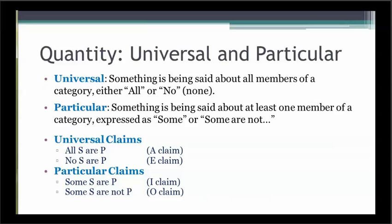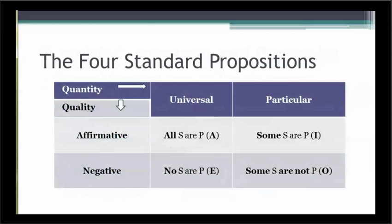Standard propositions are one of two quantities, either universal or particular. A universal claim says something about all members of a category. A particular claim says something about only some of the members of a category. The A and E claims are the universal claims, and the I and O claims are the particular claims. These characteristics can be visualized in a table with two rows and two columns. The affirmative propositions are in the top row, and the negative propositions are in the second row. Universal propositions are in the first column, and particular propositions are in the second column.